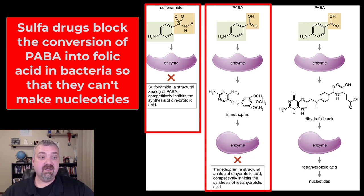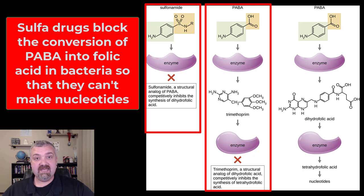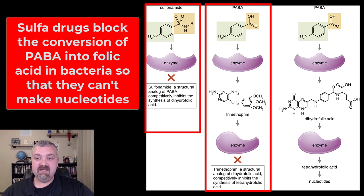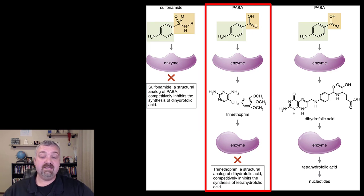The reason this is a good selectively toxic drug is because we don't make folic acid. We get it from our diet — we eat folate or take folic acid supplementation — so we don't actually produce it the same way microbes do. It doesn't mean there aren't side effects; it is selectively toxic, but allergies are really common with sulfa drugs, even more common than penicillin allergies.